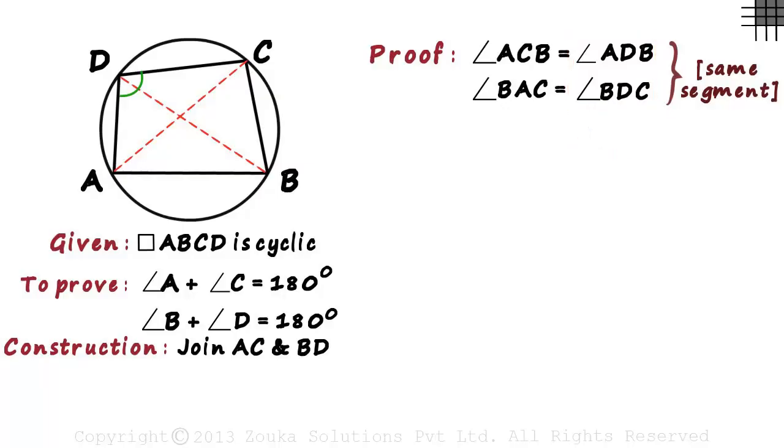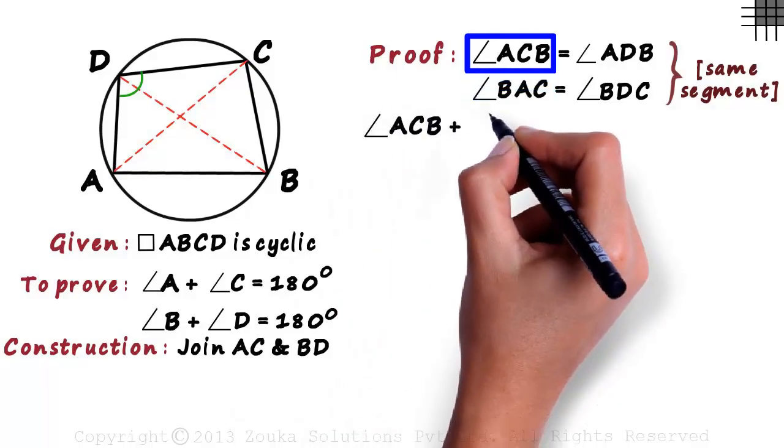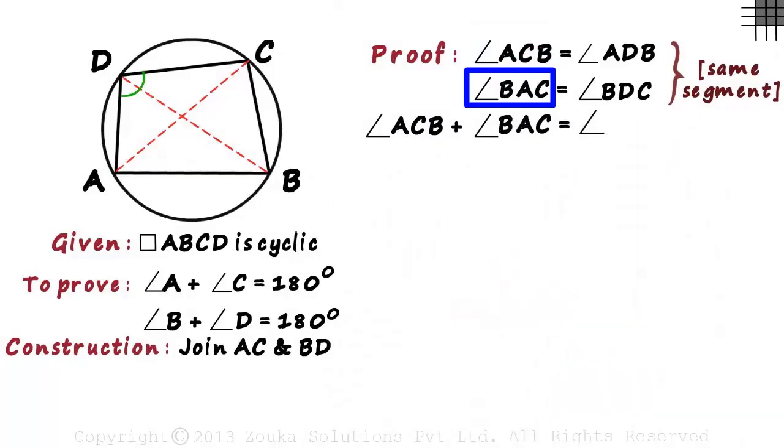But we can't just add the right hand sides. We will have to add the left hand sides too. Adding these two equations, we get angle ACB plus angle BAC equals angle D.